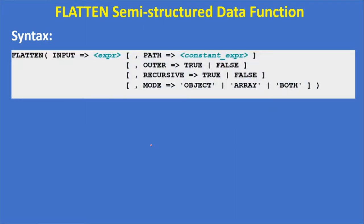The syntax for the flatten table function is: flatten(input => <expression>). The input parameter is mandatory. The other four parameters are optional: path, outer, recursive, and mode.